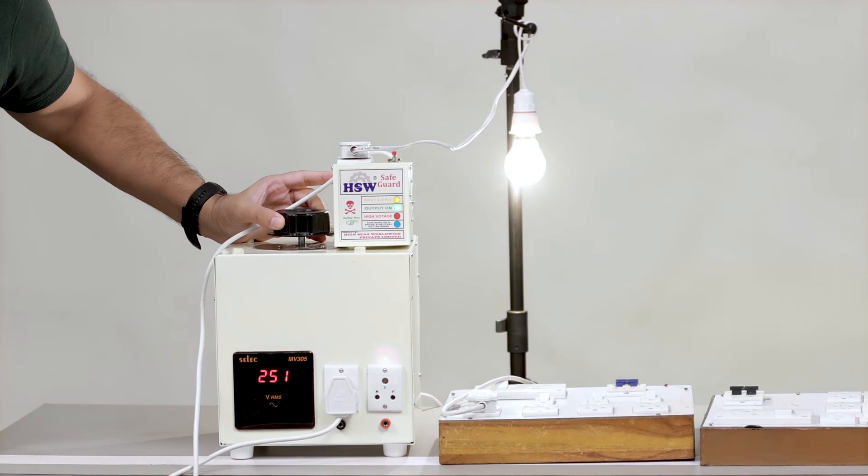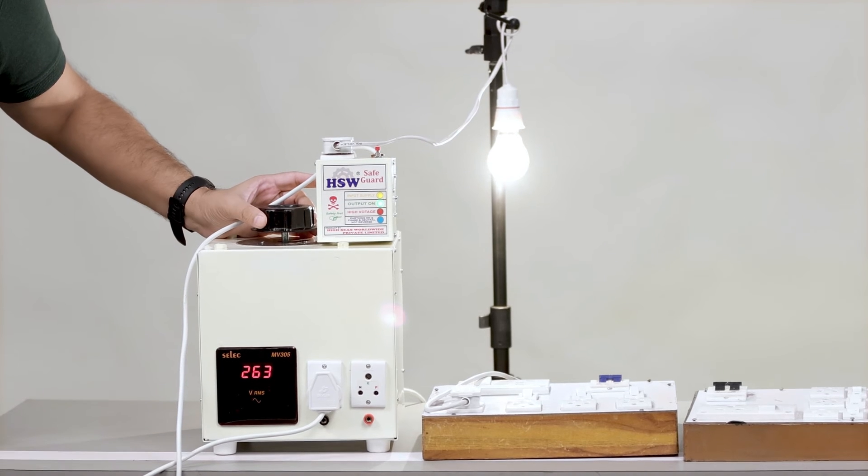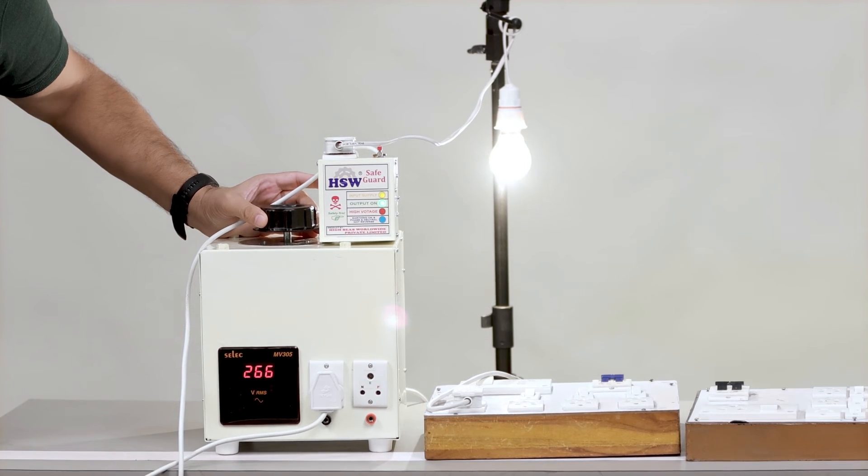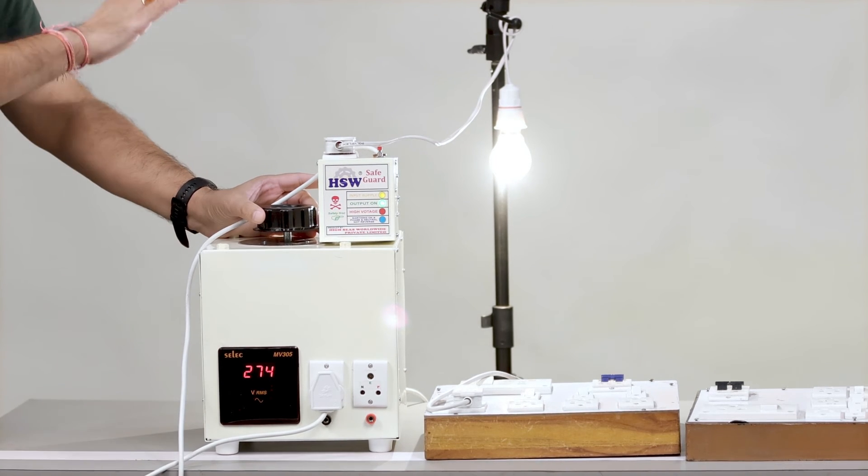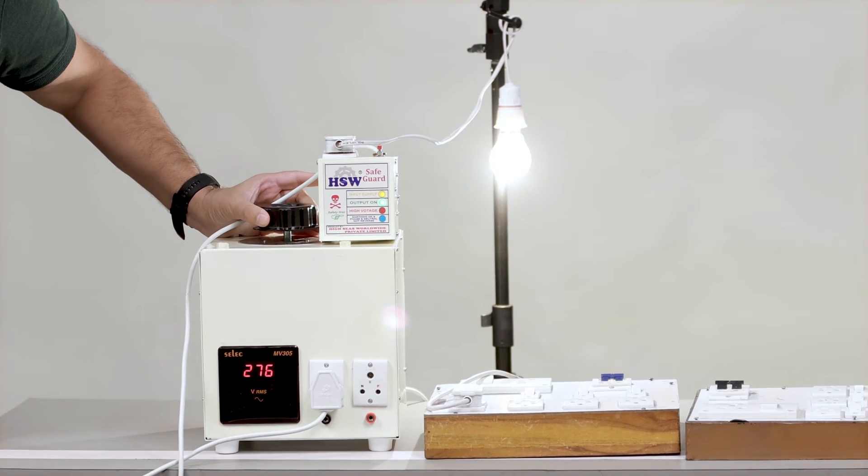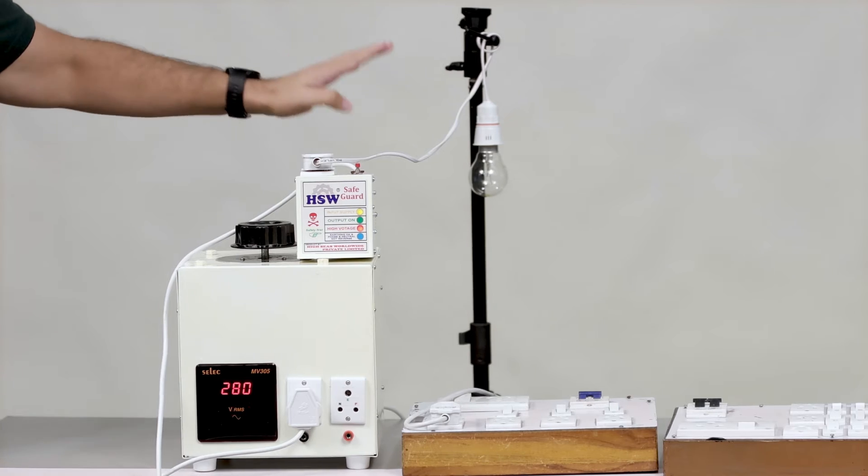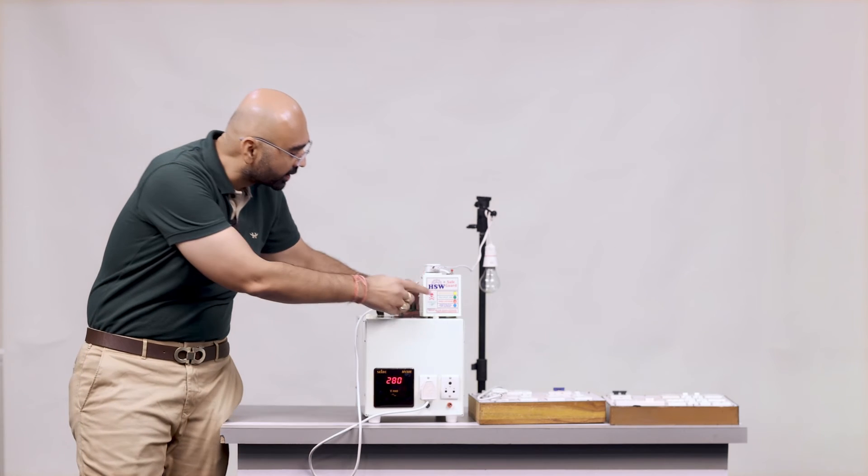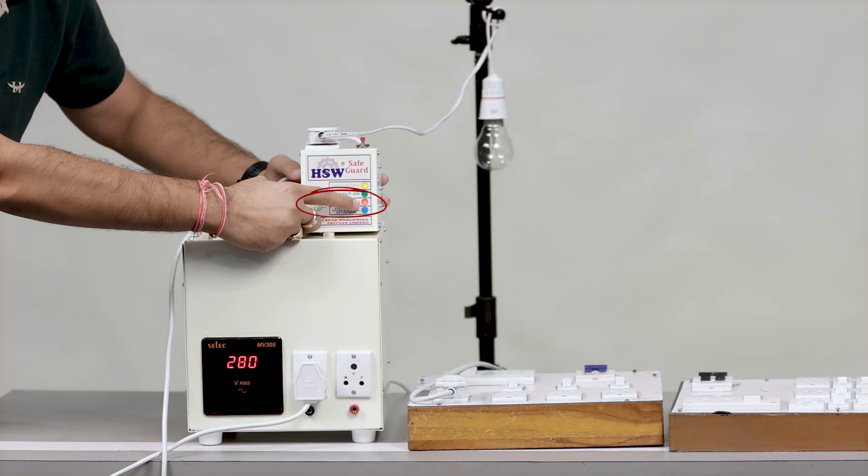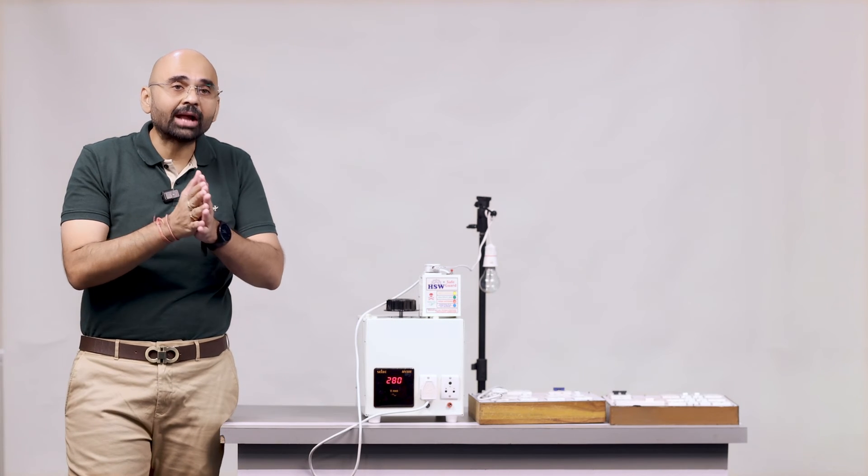So see right now we are taking straight away to 263. Now we will gradually increase it. See up to 274 our bulb is on. Now 275, as soon as it crossed 276 the light is off and over here you can see high voltage is on and this sign will be on till the time the voltage will go down.